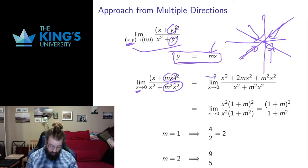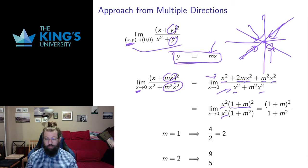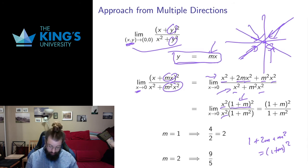I expand this numerator. This denominator is as it is. I have x squareds here, x squareds here, so I can factor them out. This numerator is going to give me 1 plus 2m plus m squared. That's the same thing as (1 plus m) squared. So after I factor that x out, this numerator is 1 plus 2m plus m squared, which equals (1 plus m) squared.